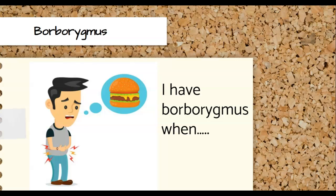Now let's try this sentence: I have borborygmus when — when does your tummy rumble? I have borborygmus when I haven't eaten in a long time. I get borborygmus. So that's the first problem that this little boy had. He came home and he was hungry. He had borborygmus, but his mom couldn't help him. She said, I don't have time to get you a snack right now. We have to sort the cullet to get it ready for the recycling bin before the truck comes.